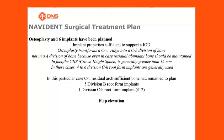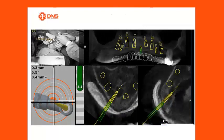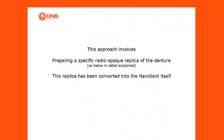The clinical steps begin with flap elevation using a guided approach with Navident. A new approach was detailed to place the Navident retaining screws, set the osteoplasty, and eventually place the implants using a staged approach with no immediate loading. This approach involves preparing a specific radiopaque replica of the denture, which has been converted into the Navistent itself.